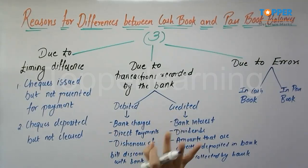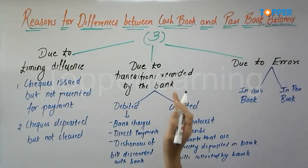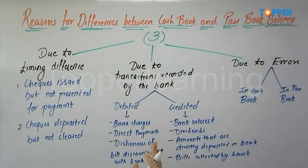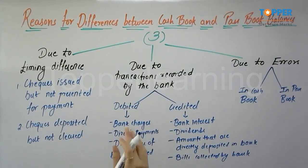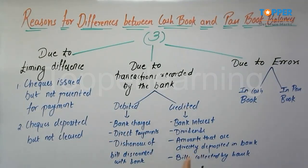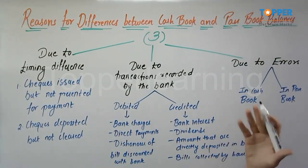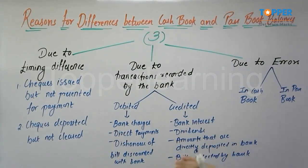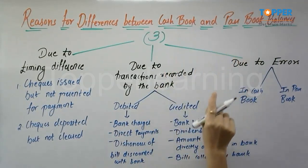With this we have completed the reasons for differences. There are three major categories: firstly, due to the timing difference — where checks are issued but not presented for payment, or checks are deposited but not cleared; secondly, transactions directly recorded by the bank through debits or credits; and thirdly, errors in the cash book or passbook related to incorrect amount, incorrect narration, or incorrect account. Moving ahead, we will also learn how to reconcile and prepare the bank reconciliation statement to match the cash book and passbook balances.